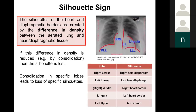The silhouettes of the heart and diaphragmatic borders are created by having a difference in density between aerated lung on one side and the heart or diaphragmatic tissue on the other. If you lose that difference in density — for example, if you've got consolidation and pus in all the alveoli — you tend to lose the silhouette. If you get consolidation in specific lobes, you lose specific silhouettes.